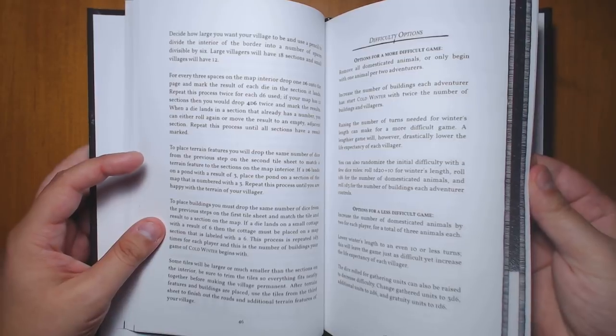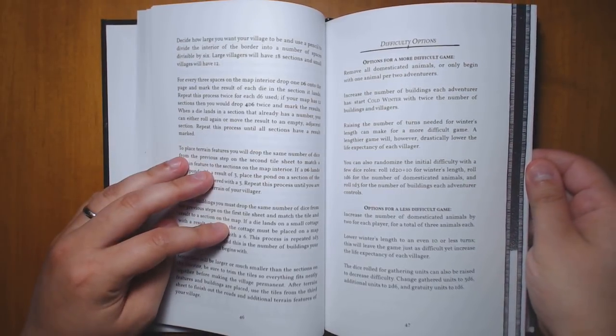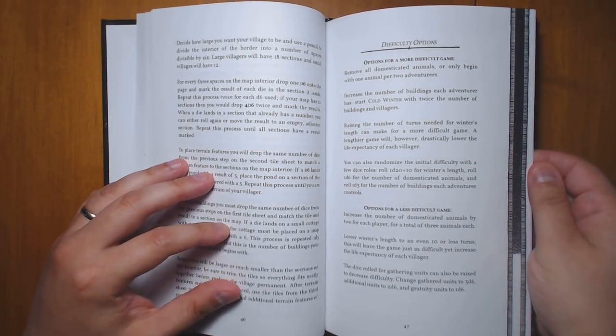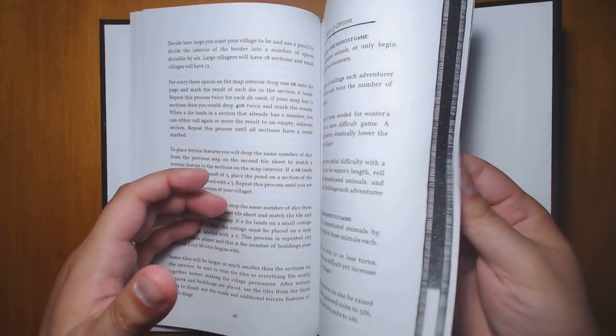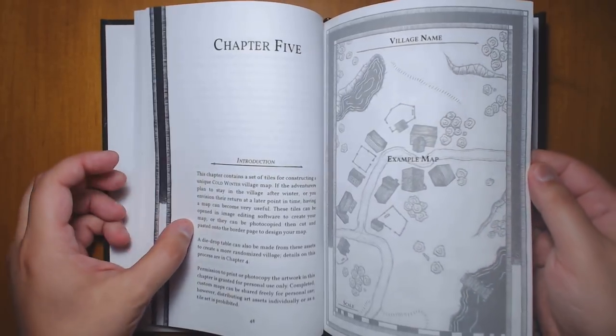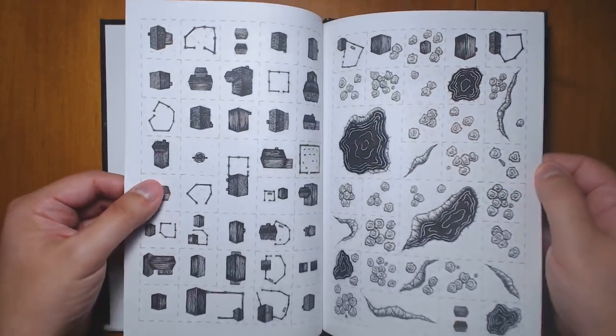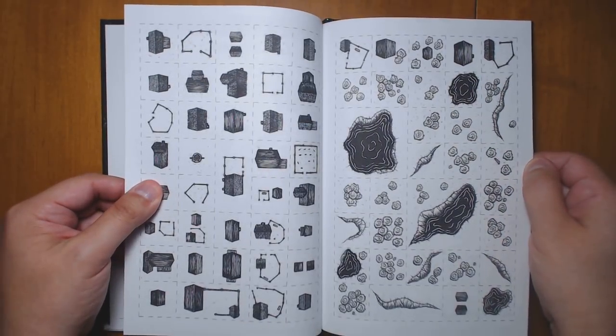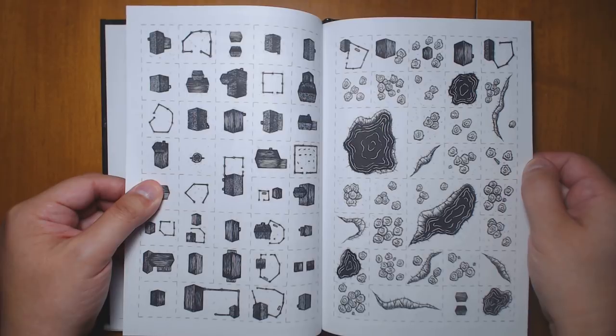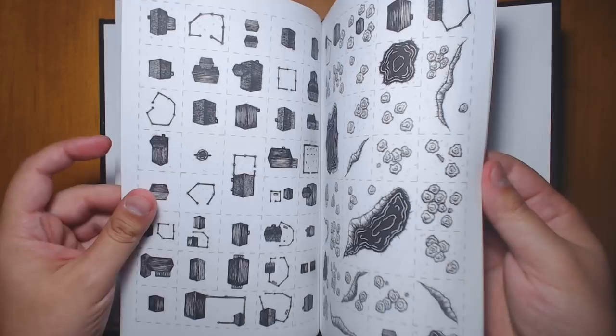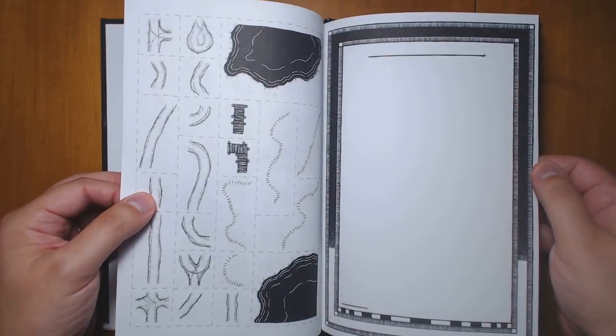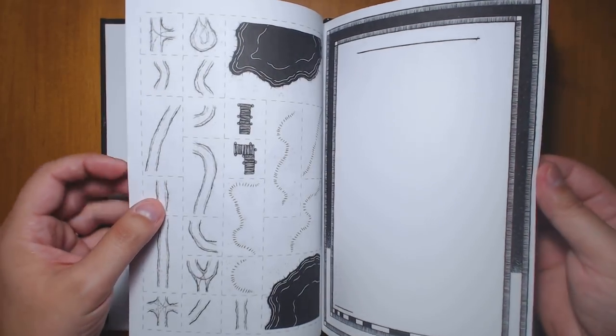A couple other rules, including a way to randomly generate a map of the village using die drop tables, which is pretty neat. And ways to scale the difficulty up or down depending on how good you are at the game. So we have a lot of these neat little tiles here that you can print and cut out. And there's rules for randomly generating what the village looks like or you can just use them in your own game to create your own village. We've got some little lakes and paths and so on.